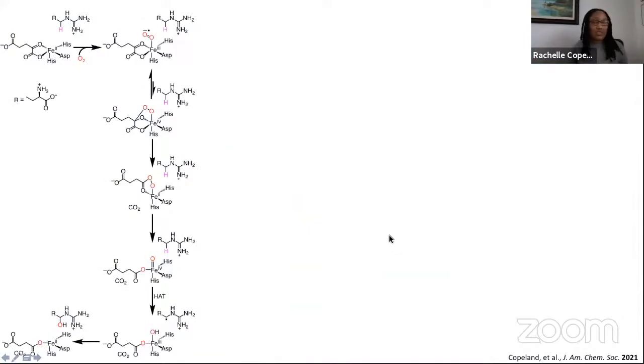Because this enzyme is able to do these two different reactions, a good place to start thinking about it mechanistically is with the classical mechanism. As I showed previously, we have an iron center with 2-OG coordinated to it and the prime substrate or the unique substrate of the enzyme, which in this case is L-arginine, bound nearby. The open coordination site allows for oxygen to bind, forming an iron-three superoxyl species, which then is able to attack C2 of 2-OG.